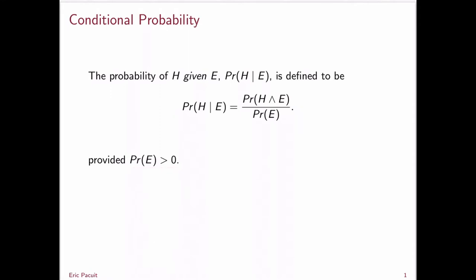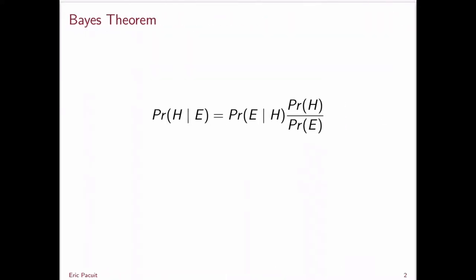Bayes' theorem gives you an alternative way to calculate the probability of H given E. The probability of H given E is equal to the probability of E given H times the probability of H, divided by the probability of E.